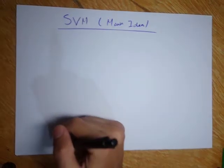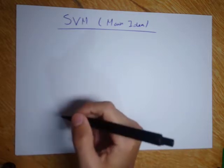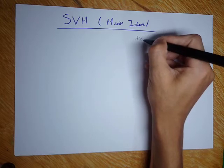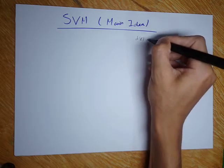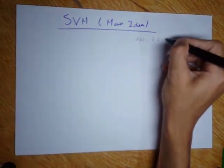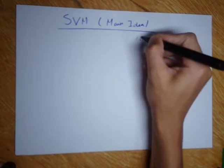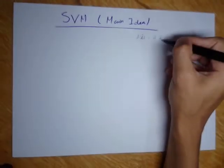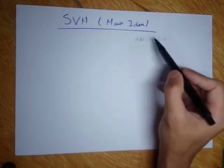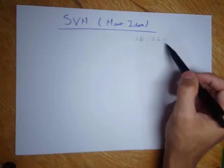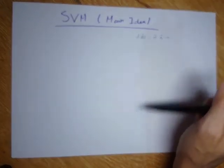Welcome back. In the previous video I talked about how to develop the expression of the decision function d of x, and we developed something like that. So this was our decision function: d of x equal to w dotted with x plus b. W represents the orientation of the decision line, and the position of the decision line given this orientation.